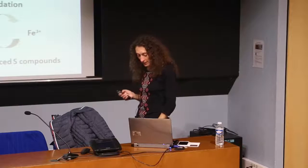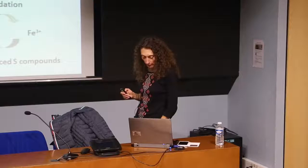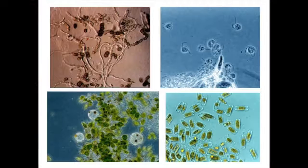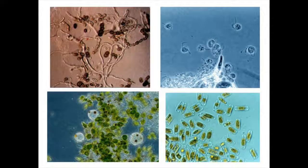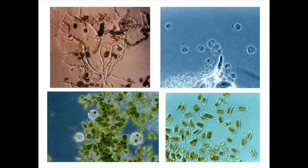At low pH you also find a variety of eukaryotes, not only prokaryotes. The Río Tinto in Spain, with an average pH around 2 to 2.5, hosts a wide variety of eukaryotic organisms: fungi, diatoms, Euglena, heliozoans, and different flagellates.